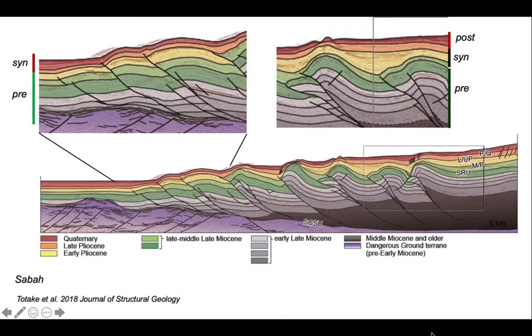So putting these two cross sections together, we've got clear evidence of diachroneity in the deformation. Up slope, the structures were active earlier. Down slope, they were active later. And in fact, they're active today. The seabed is deformed.